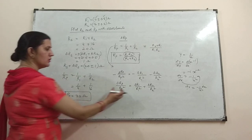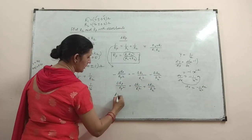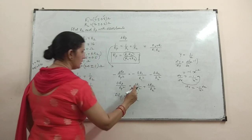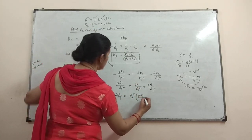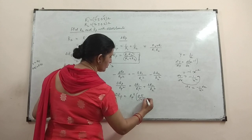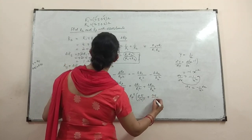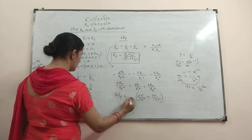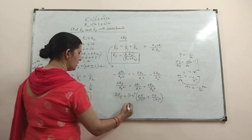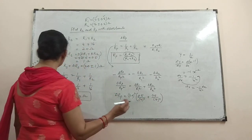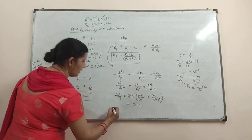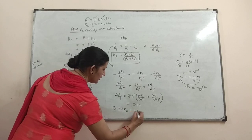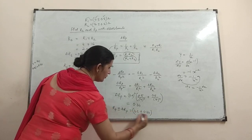You have calculated Rp, so take Rp squared to the right hand side and you will have delta Rp. This equals Rp squared times delta R1 by R1 squared plus delta R2 by R2 squared. Delta R1 is 0.5, R1 is 4, delta R2 is 0.5, R2 is 16, and Rp is 3.2. Solving this gives delta Rp equal to 0.34. Now you can write Rp plus minus delta Rp is equal to 3.2 plus minus 0.34 ohm.